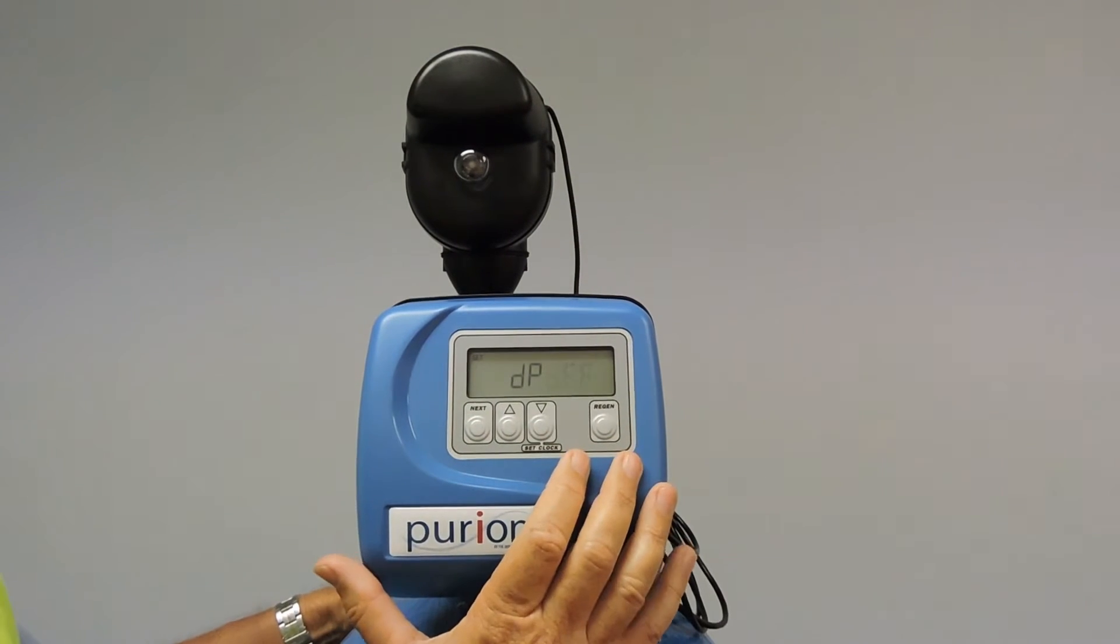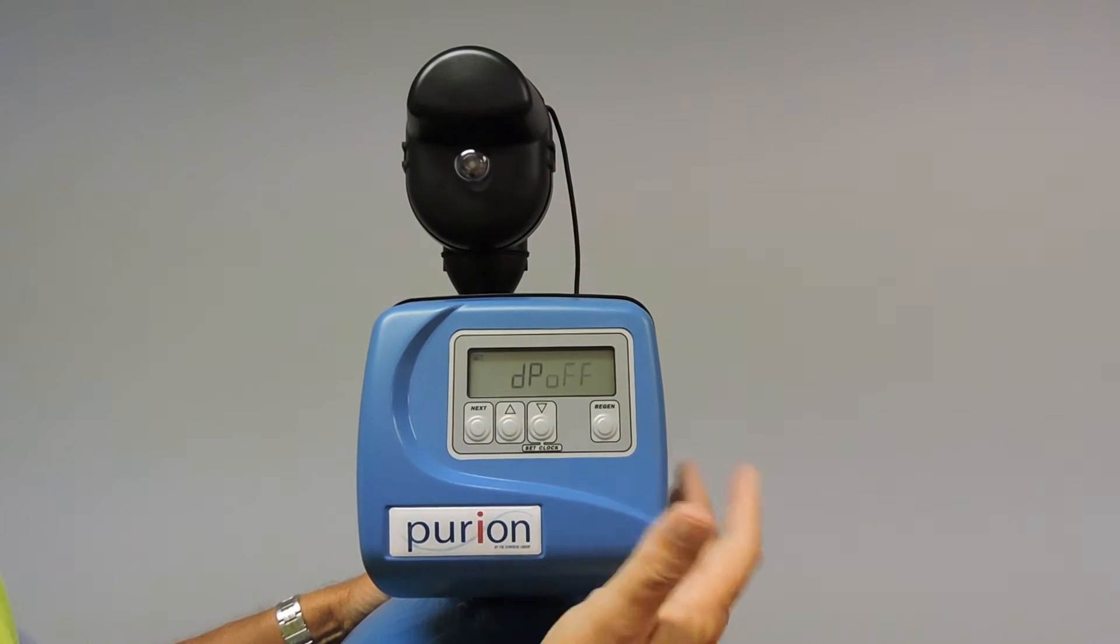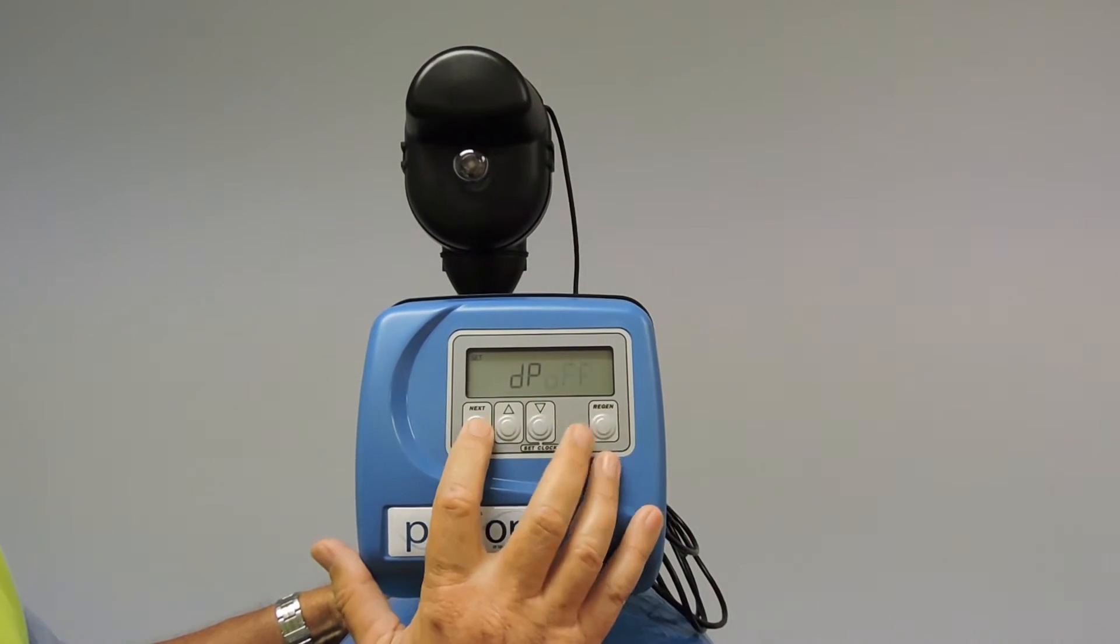That brings us into DP off. DP is for differential pressure. For a softener we're not utilizing that so we just accept off.